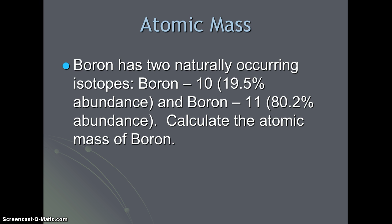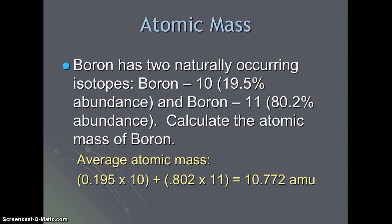Boron has two naturally occurring isotopes, boron-10, which is 20 percent abundant in the universe, and boron-11, which is 80 percent abundant. In order to calculate the atomic mass, we need to change the percentages into decimal form and multiply them by each of the isotope mass numbers. We will then add our results together. So the average atomic mass of boron becomes 0.195 times the mass number of 10, plus 0.802 times the mass number of 11. This gives us an average atomic mass of 10.772 atomic mass units.